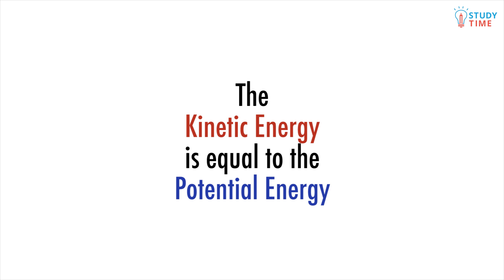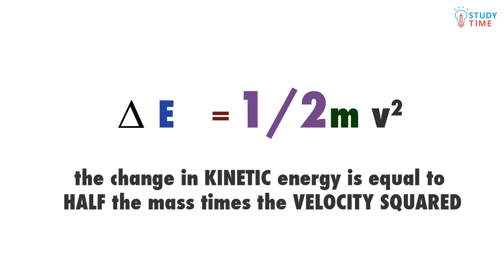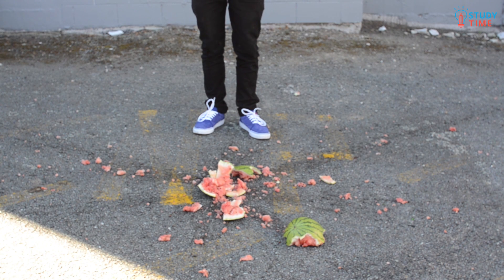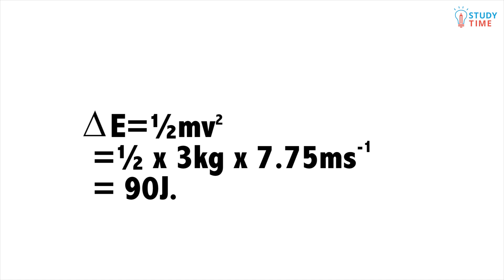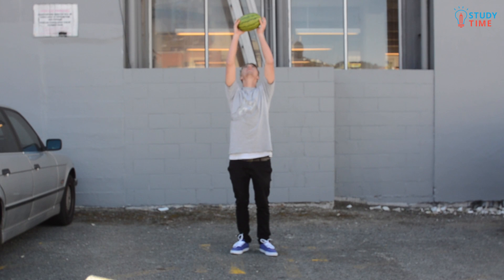But we can work out the kinetic energy separately if we want. The equation is ΔE equals half mv squared, which reads the change in kinetic energy is equal to half the mass times the velocity squared. James measures the velocity of the watermelon and it's 7.75 meters per second. The kinetic energy then is ΔE equals half mv squared equals half times 3 kilos times 7.75 meters per second squared equals 90 joules. Hopefully you can see the relationship between work, potential energy and kinetic energy.